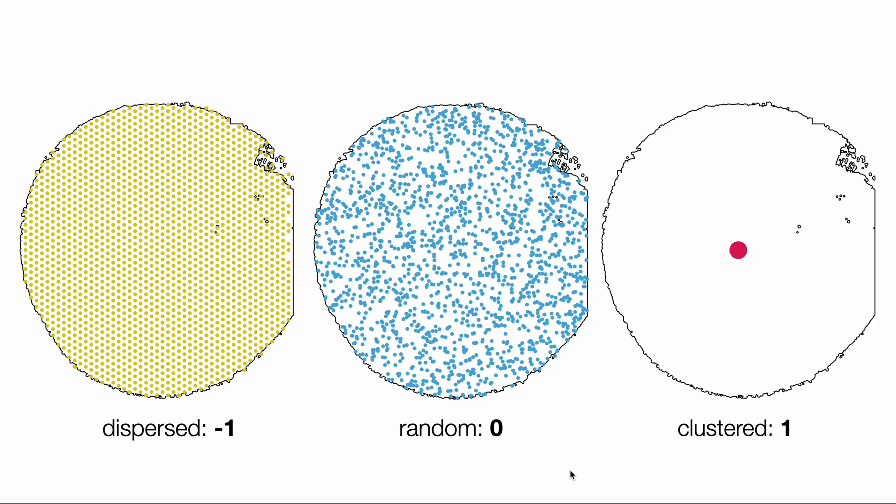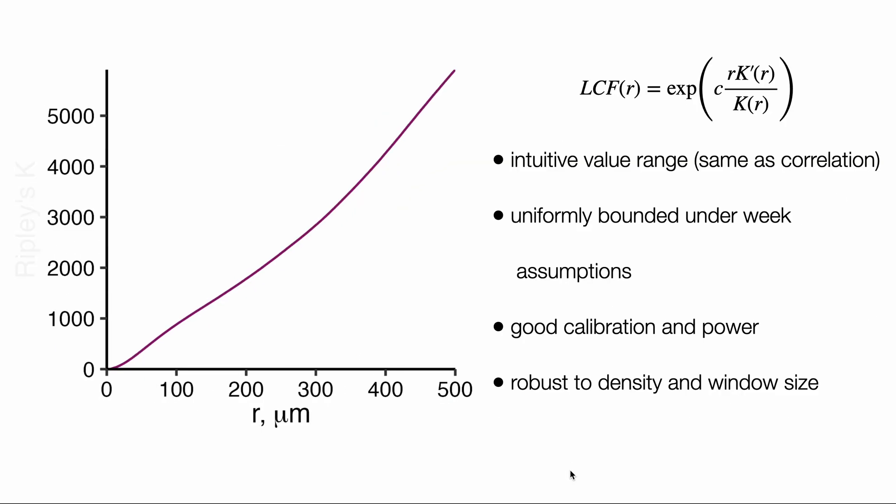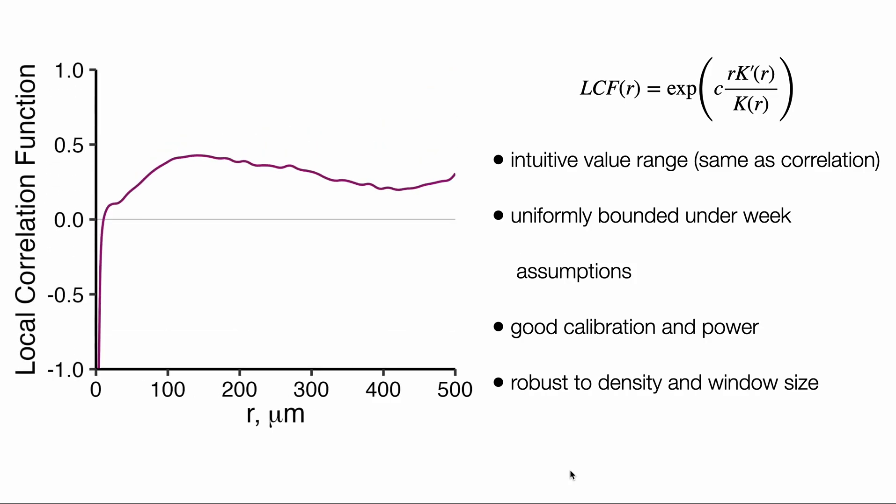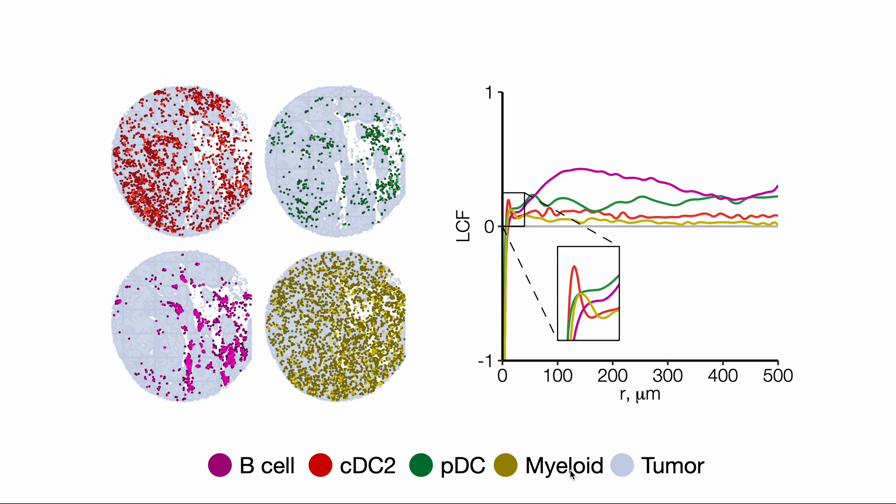In essence, the local correlation function is a transformed k-function. The main advantage of our function is that its value can be interpreted as a degree of clustering between objects. We encourage researchers in different fields to try the local correlation function for spatial analysis.